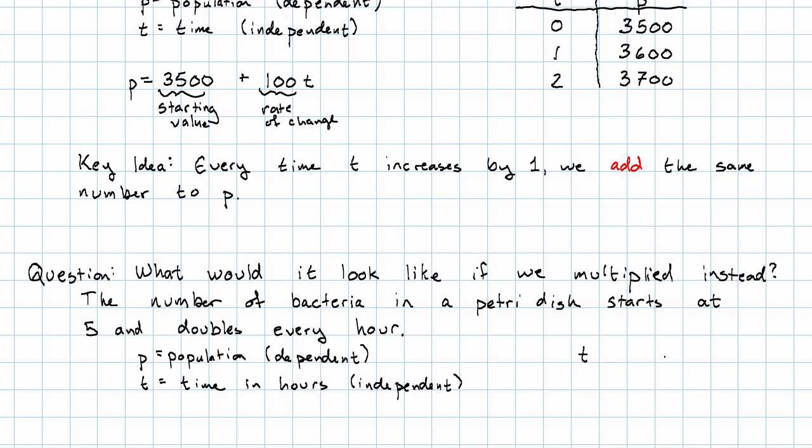What does this look like? At the beginning, after no hours, there are 5 bacteria in the dish. After 1 hour, it says the population doubles. That means multiply by 2, right? So after 1 hour, the population goes up to 10, because that's 5 times 2.